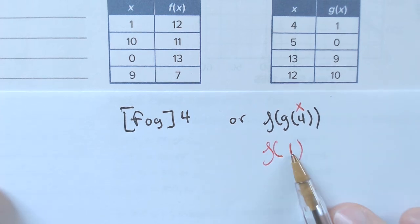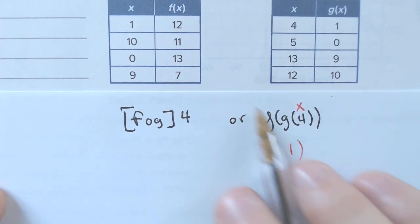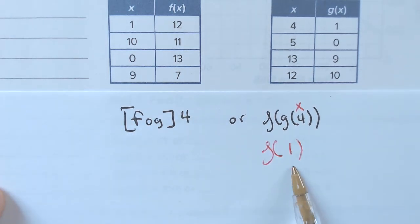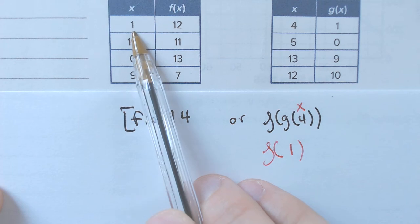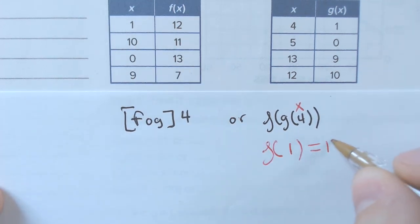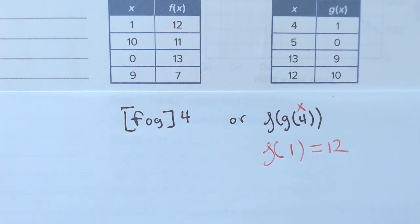And then if I take this 1 and plug it in to the f of x function, because it's f of 1, I would end up getting a value of 12. So, that means this would equal 12. All right?